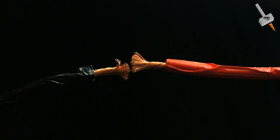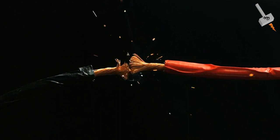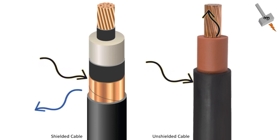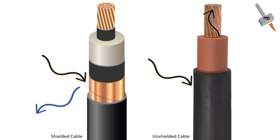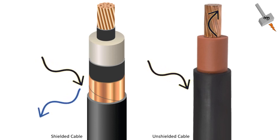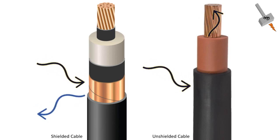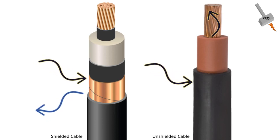Number four is shielded cables. Shielded cables have an additional layer of conductive material, typically a metal foil or braided wire, surrounding the inner conductors. This shielding layer helps to reduce or eliminate interference from external electromagnetic sources.